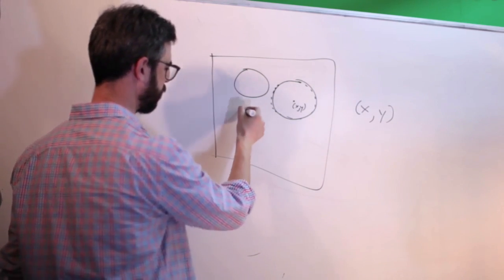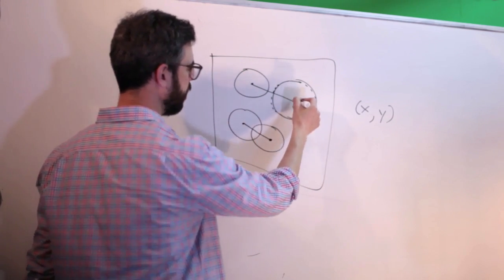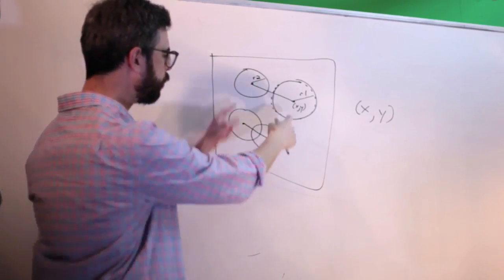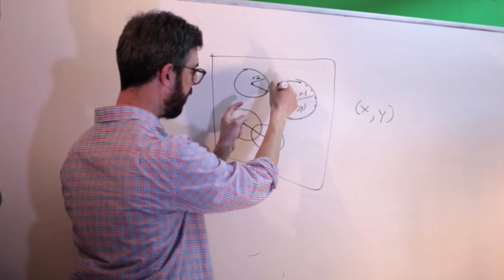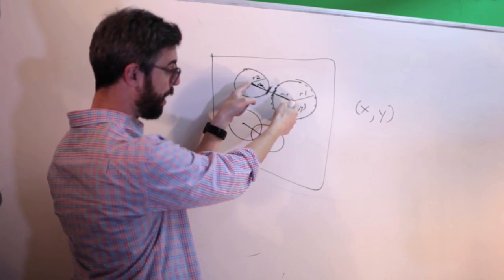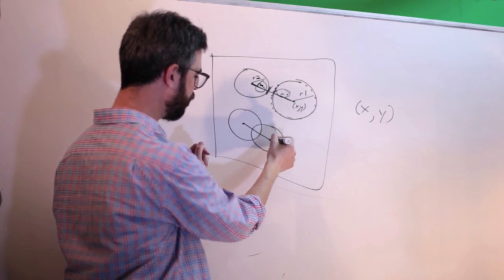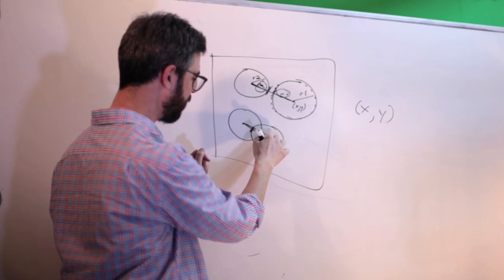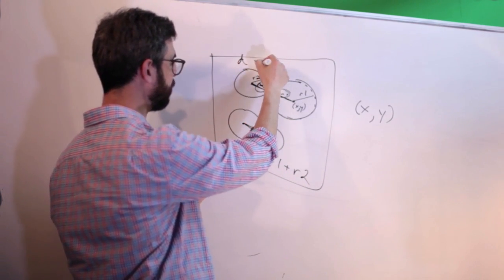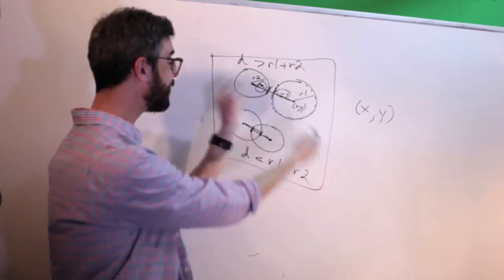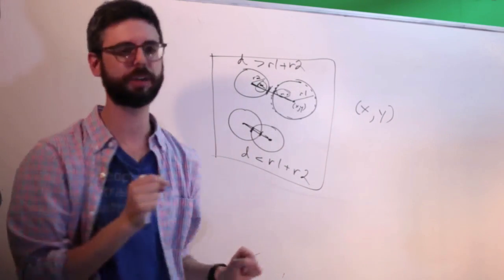So how do I know if two circles are overlapping? The way I could determine that is by looking at the distance between the circles. Here is r1 and here is r2 — each circle has a radius. If the distance between the circles is greater than adding those two radii together, then they're not overlapping. But if the distance is less than r1 plus r2, they are overlapping. So the relationship between the distance between the two circles and their radii is all the information you need to determine if they overlap.